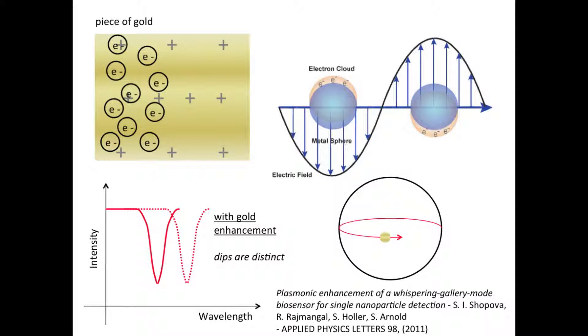What we do is add a particle of gold to the equator of the sphere to create a double resonance. But the enhancement from the gold only affects our results if the protein lands right on the gold particle. To make sure that happens, we have to look at the biology of the protein we're trying to detect.